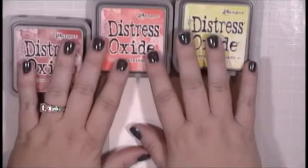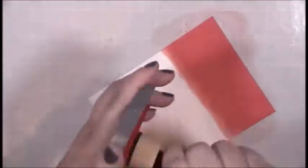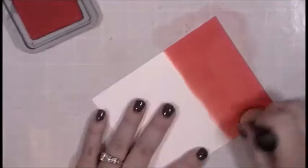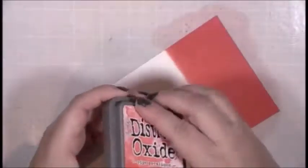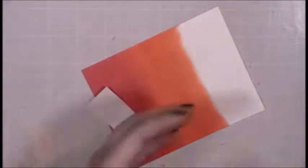I am going to be using some Distress Oxide inks to do a blended background panel for one card. I am using a red and an orange and a yellow because they naturally blend together. I believe it's Fired Brick, Rite Persimmon, and Lemon Squeezed Lemonade that I start with. And I'm just using my ink blending tools on a craft mat because it's easy cleanup.